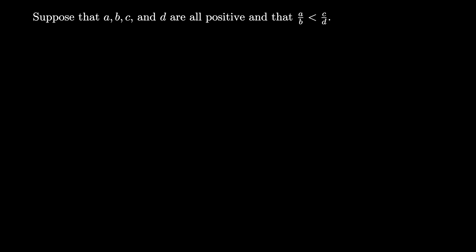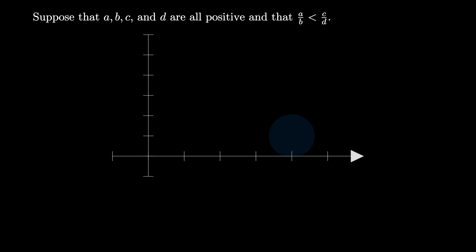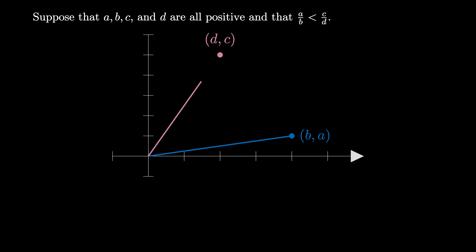Suppose that A, B, C, and D are all positive real numbers and that A over B is less than C over D. The line connecting the origin to the point (B, A) has a slope of A over B. The line connecting the origin to the point (D, C) has a slope of C over D. Therefore, by assumption, the line connecting (0, 0) to (B, A) has a slope that's less than the slope of the line connecting (0, 0) to (D, C).